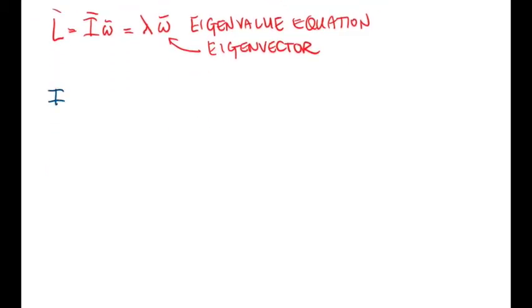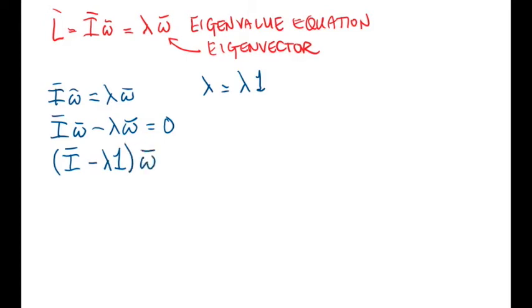We have that the inertia tensor times the angular velocity is equal to lambda times the angular velocity, which means that I omega minus lambda omega equals zero. If we represent lambda as lambda times the identity matrix, which here I will call 1 so we don't get it mixed up with the inertia tensor, then we have that (I - lambda 1) omega equals zero.